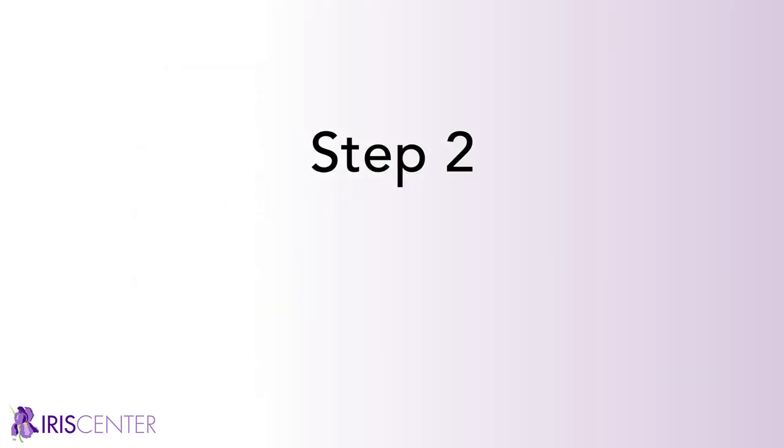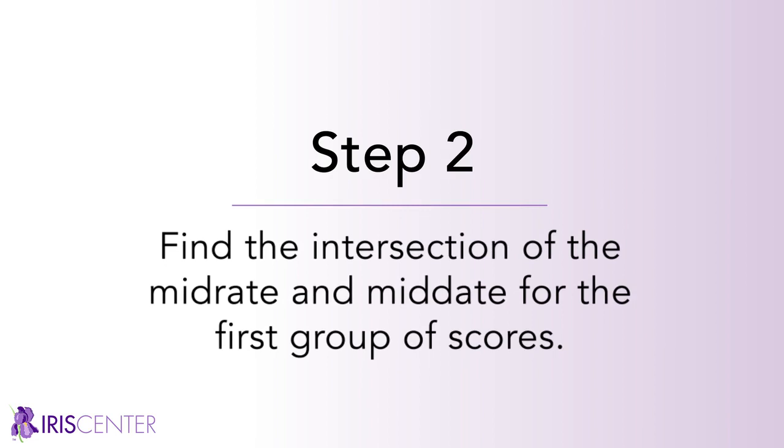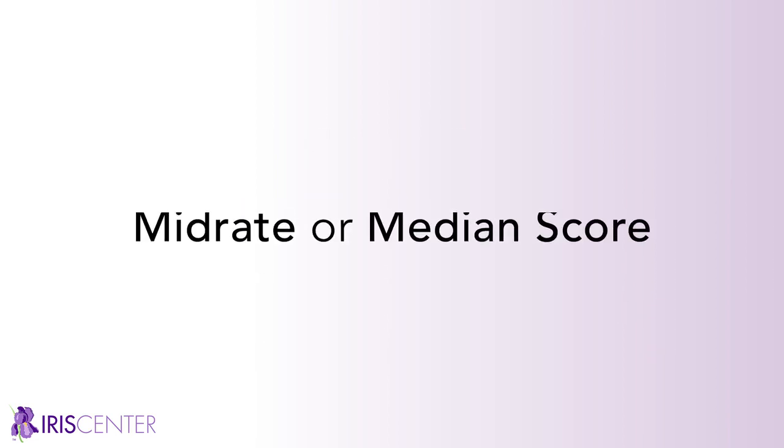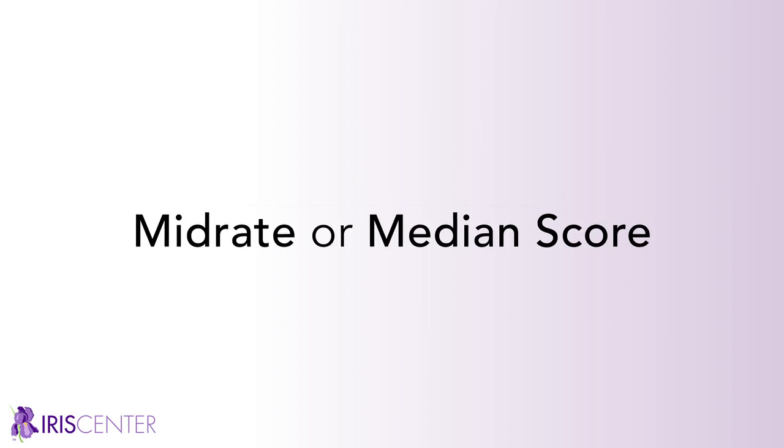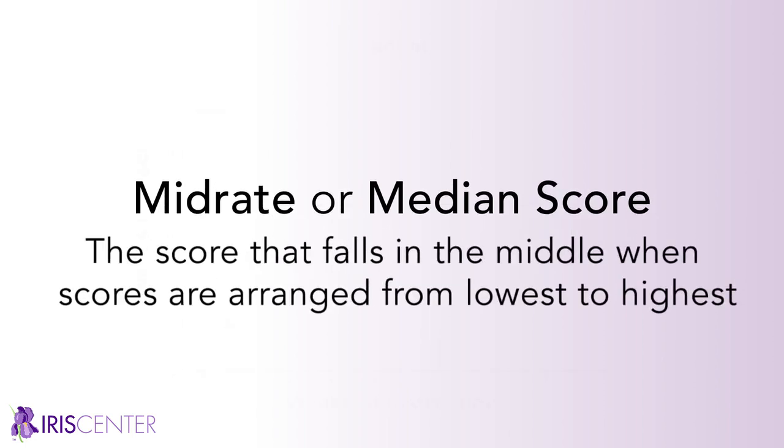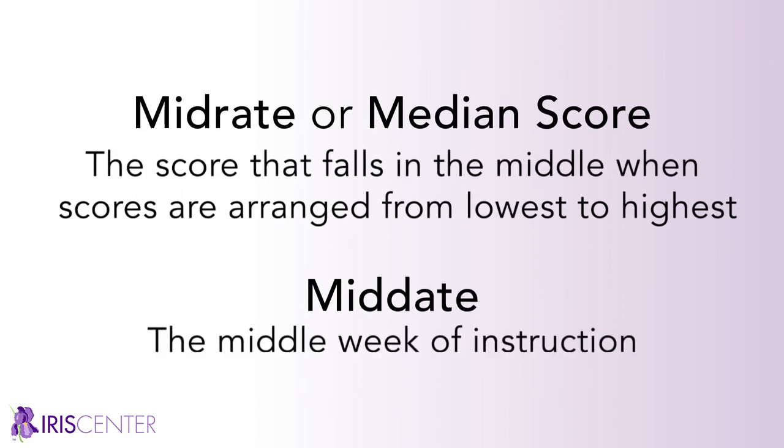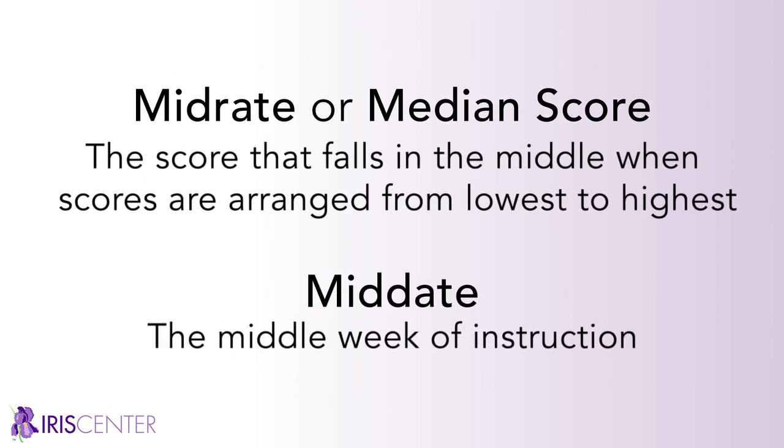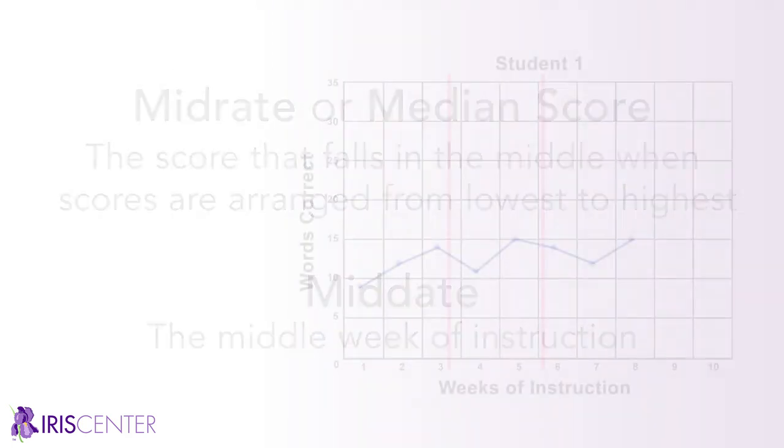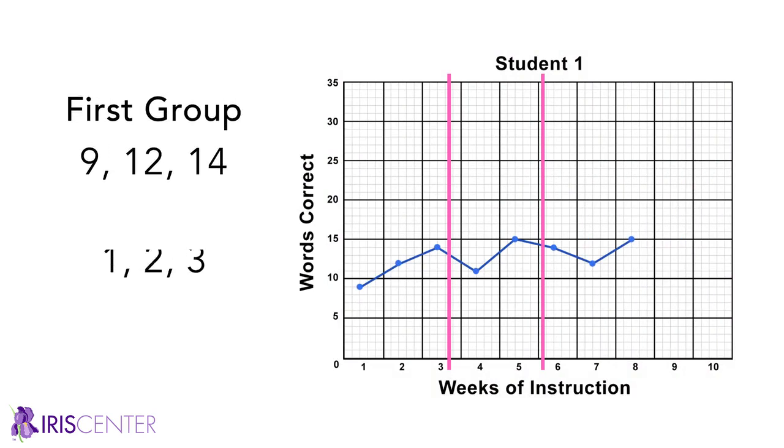Step 2: Find the intersection of the mid-rate and mid-date for the first group of scores. The mid-rate or median score is the score that falls in the middle when scores are arranged from lowest to highest. The mid-date is the middle week of instruction. Place an X at the intersection of the mid-rate and mid-date. In our example, the first group contains three scores across the first three weeks of instruction. The scores are already arranged from lowest to highest, so we can easily identify the mid-rate and mid-date. Now we place an X at the intersection of the mid-rate, 12, and the mid-date, week 2.